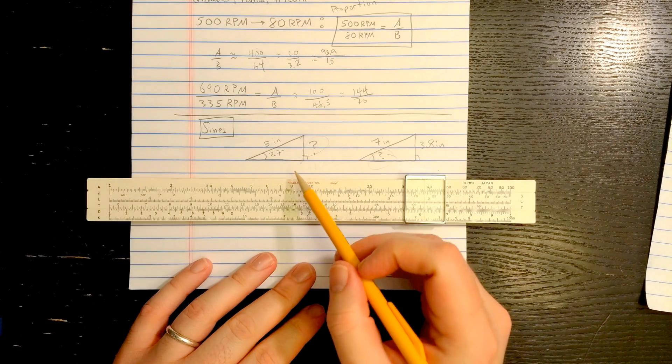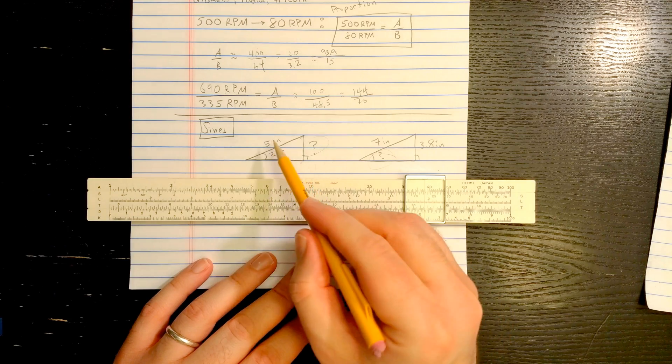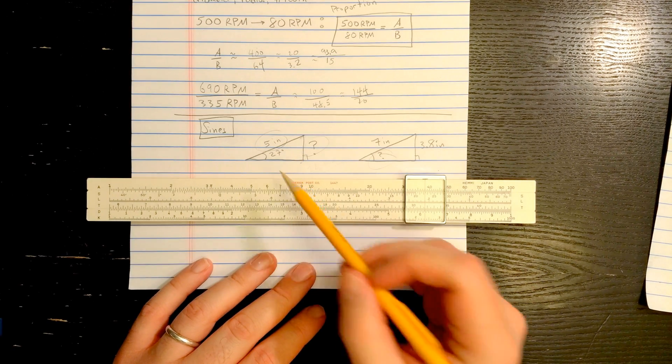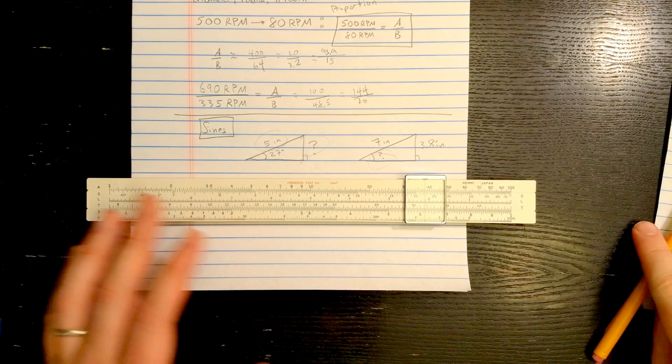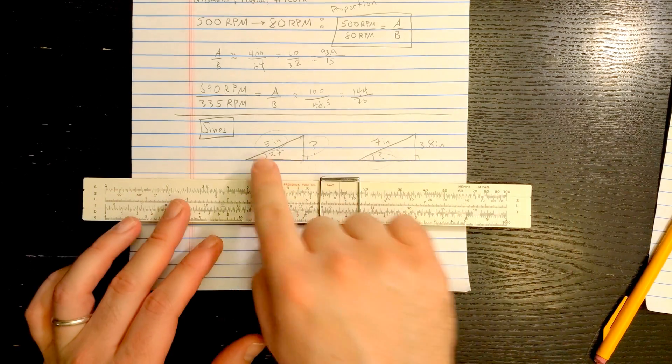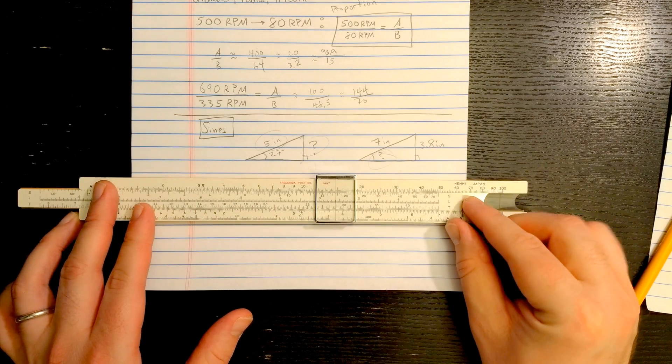The trick is when you're solving a right triangle with the S scale, you always have to hypotenuse at the end of the S scale. So here we have hypotenuse 5, let's use this 5 at the end here.